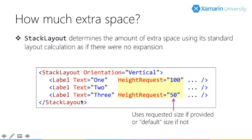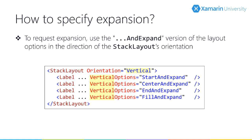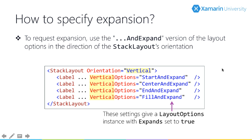A child requests expansion using layout options. For a vertical stack layout, children that want expansion should set their vertical options to one of: StartAndExpand, CenterAndExpand, EndAndExpand, or FillAndExpand. Behind the scenes, LayoutOptions is a struct with two fields: an alignment field (set by start, center, end, fill) and a boolean 'expands'. Adding the 'AndExpand' part just sets that underlying boolean flag to true.